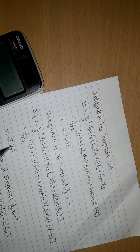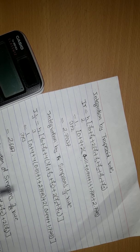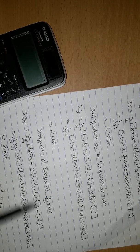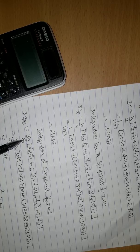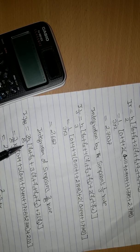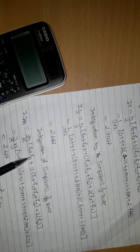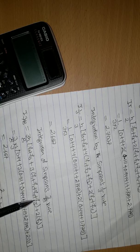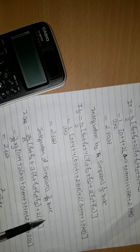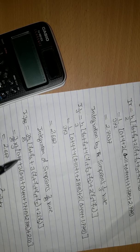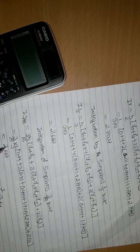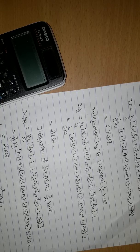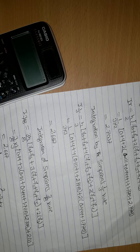Integration of Simpson 1 by 3rd rule is equal to 2.667. Integration of Simpson 3 by 8 rule is equal to 3H divided by 8, F0 plus F6 plus 3 bracket F1 plus F2 plus F4 plus F5 plus 2 bracket F3. Integration of Simpson 3 by 8 is equal to 2.667.